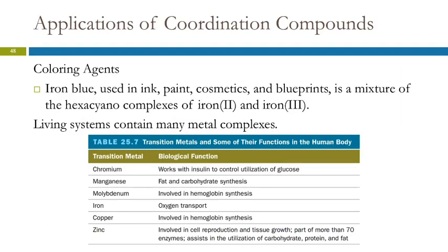We can use complex ions as coloring agents. Iron blue is used in lots of different things, ink, cosmetics, blueprints. It's a mixture of hexacyano complexes of iron 2 and iron 3.